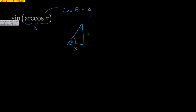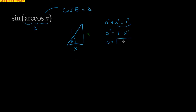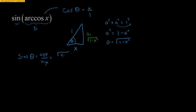We figure out the remaining side using the Pythagorean theorem: a² + x² = 1², so a² = 1 - x², and taking the square root gives a = √(1 - x²). The triangle is now complete. Going to the outside, sine is opposite over hypotenuse, so the opposite side is √(1 - x²) over 1, which simplifies to just √(1 - x²) as our final answer.